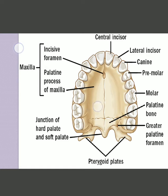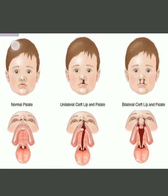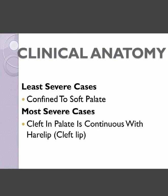The palatine processes of the maxilla bone — right side and left side — if they do not fuse together, this condition known as cleft palate occurs. In this figure you can see a normal palate compared to unilateral and bilateral cleft lip and palate. In the least severe cases the cleft is confined only to the soft palate, but in more severe cases it involves the lip and palate, and is known as cleft lip and palate — continuous with the harelip or cleft lip.